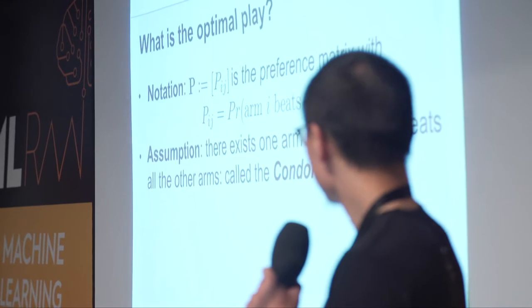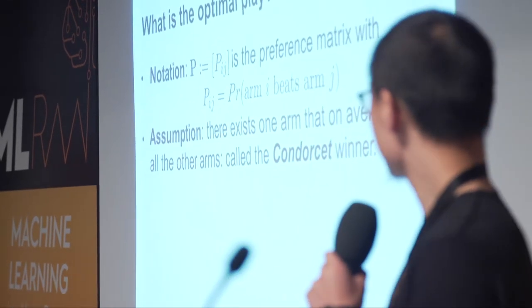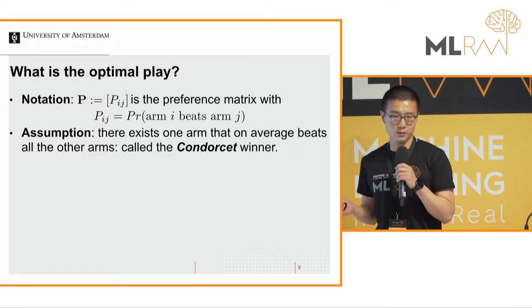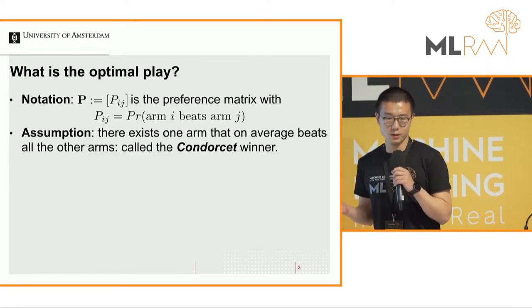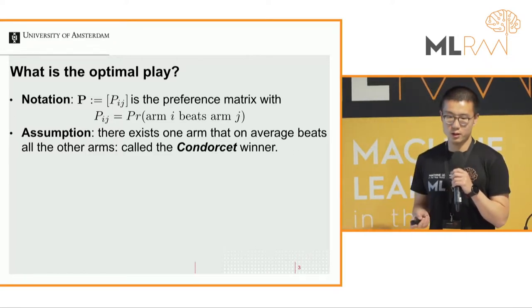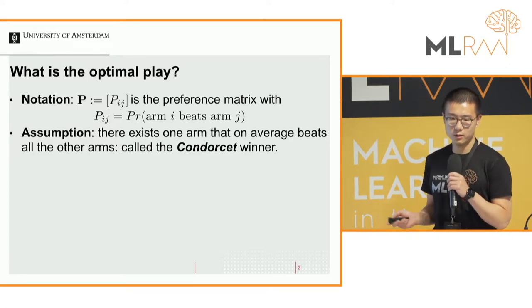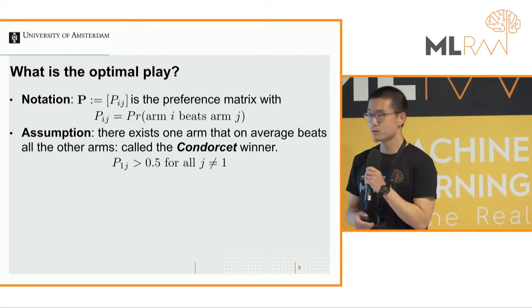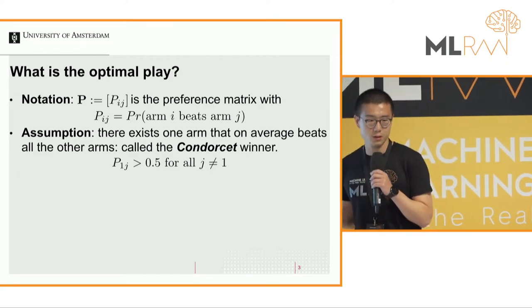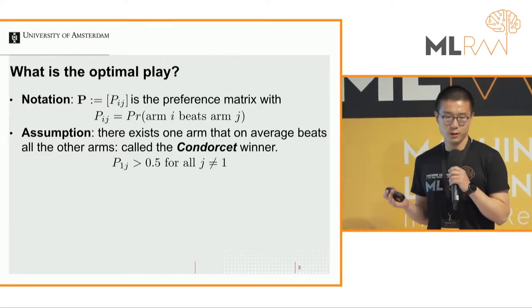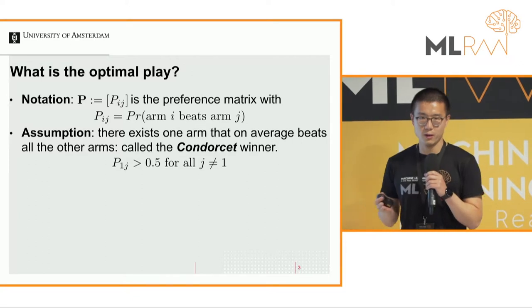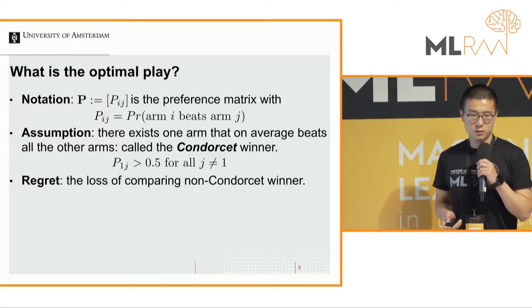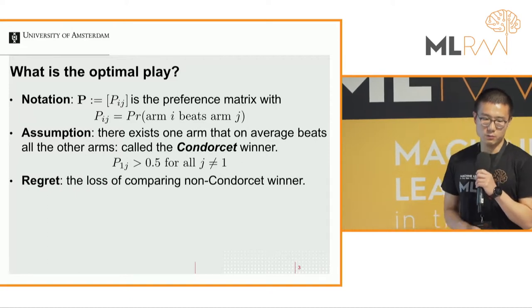Our assumption is that there exists one arm that on average beats all the other arms — we call this arm the Condorcet winner. Mathematically, if the first arm is the Condorcet winner, the preference matrix values of the first arm compared to all others are larger than 0.5. And of course, since we are doing bandits, we have some regret.